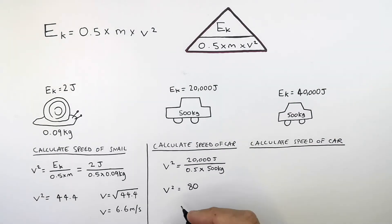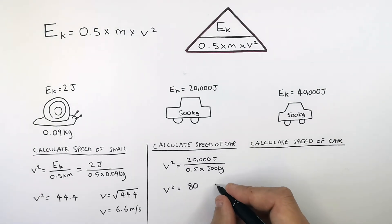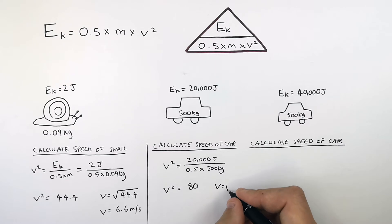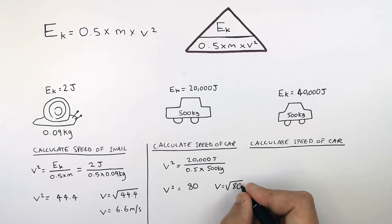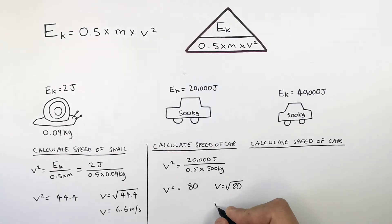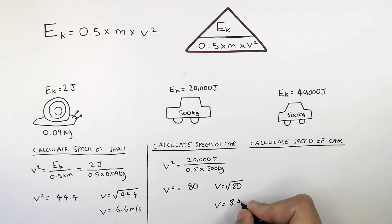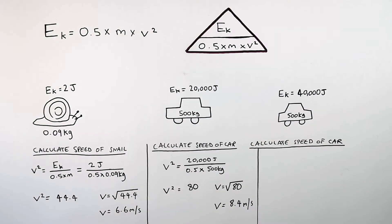V squared is not your speed. So to work out the speed, you must square root 80. So V equals the square root of 80, which gives V equals 8.4 meters per second. That is the speed.